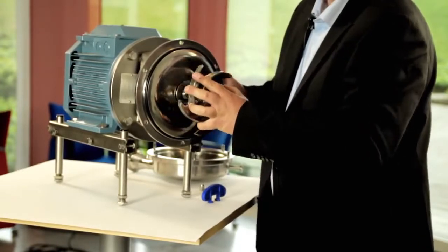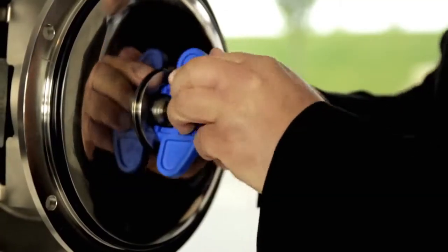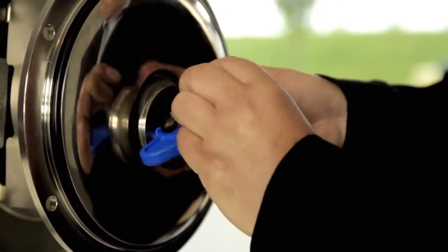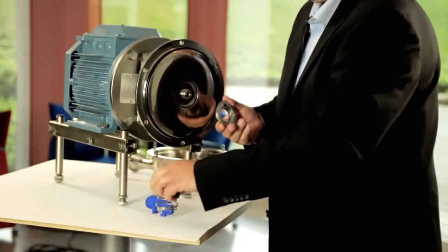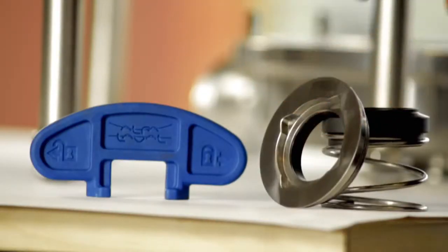Many pumps have an internal seal, which means a contamination risk. The LKH Ultrapure is different. It features an external seal solution, which makes it easy to clean and minimizes the contamination risk.